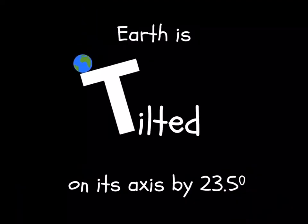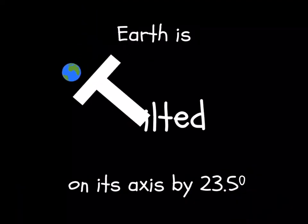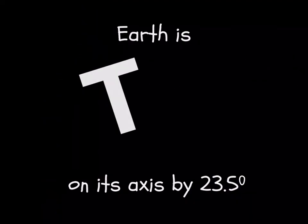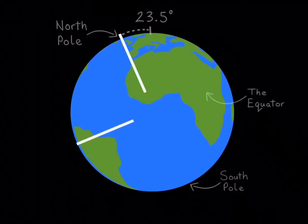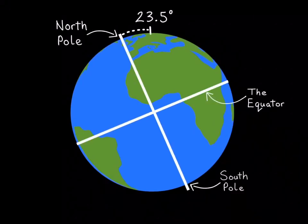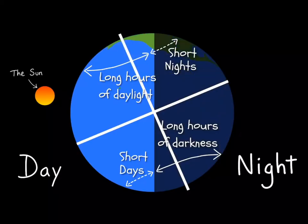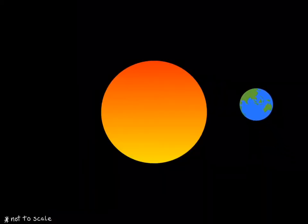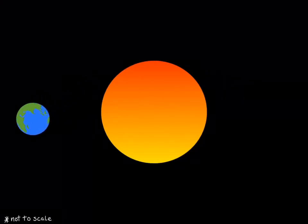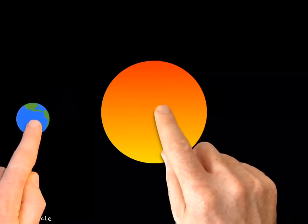Earth is tilted on its axis by 23 and a half degrees. One impact of axial tilt is on the number of hours of daylight and darkness, depending on whether a hemisphere is tilted towards or away from the Sun. All of these factors combine to produce our seasons.